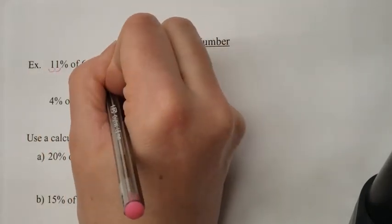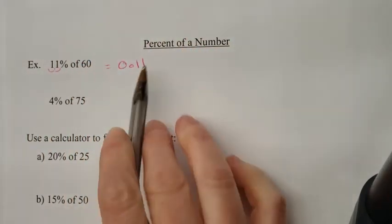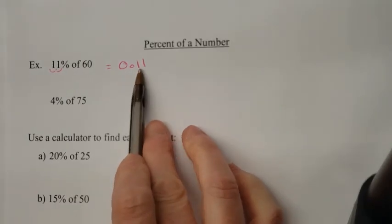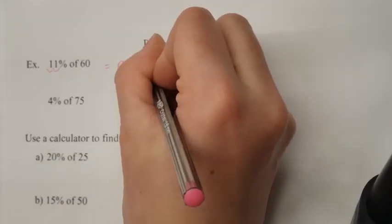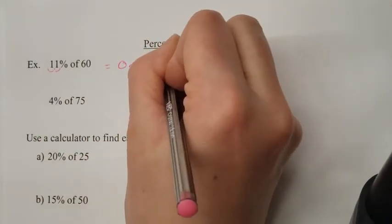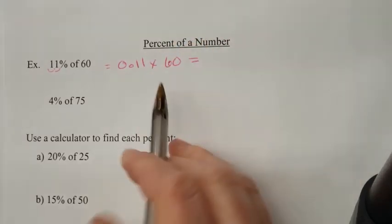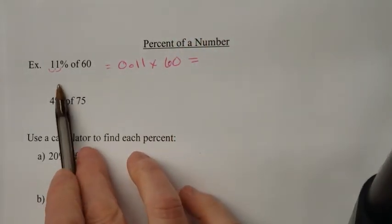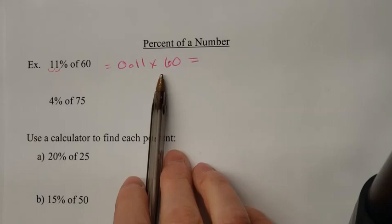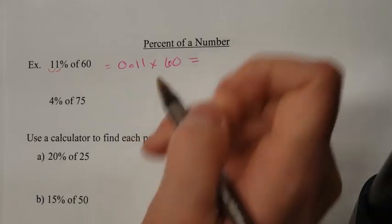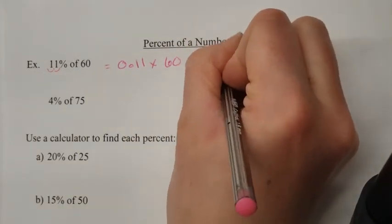So that becomes 0.11, because I've moved it once, twice. 'Of' means times 60. So then you just put this into your calculator: 0.11 times 60, and you get 6.6.